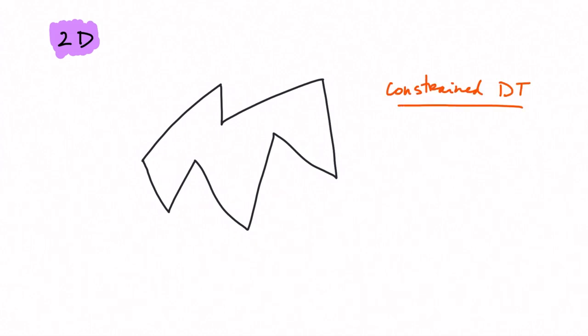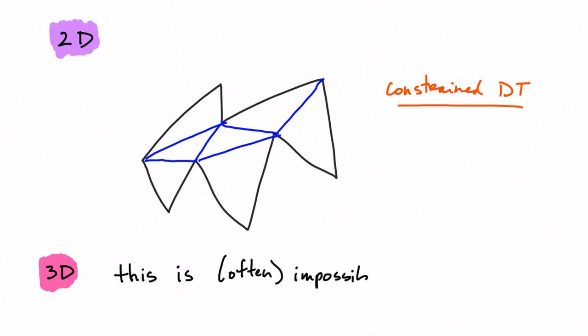The constrained Delaunay triangulation in 2D relaxes the Delaunay rule and doesn't add any Steiner vertices. However, notice that this is impossible in three dimensions.